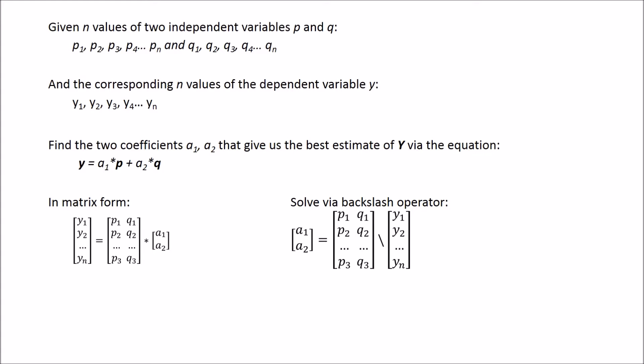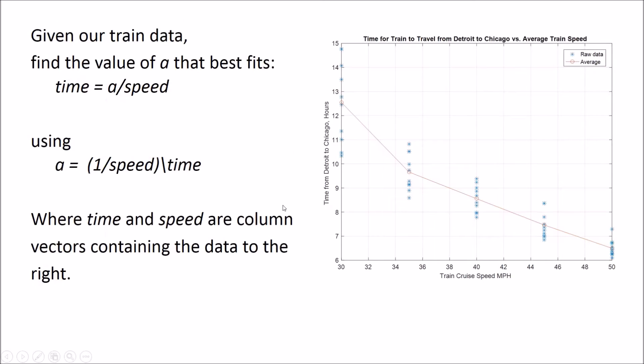Our particular problem: given our train data, find the value of a that best fits this equation. We want time equals some constant divided by the speed, so we will find our coefficient using taking the inverse of the speeds backslash time, where speed and time are column vectors with the data from this chart that we used before.